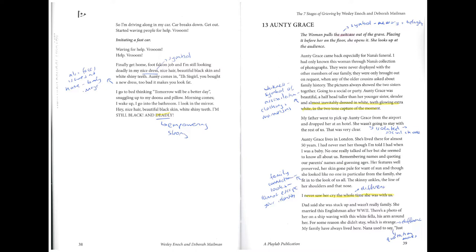Scene 13: Aunty Grace. The woman pulls the suitcase out of the grave, placing it before her on the floor. She opens it and looks up at the audience. Aunty Grace came back especially for Nana's funeral. I'd only known this woman through Nana's collection of photographs — never displayed with the other family members, only brought out on request when older cousins asked about family history. The pictures always showed the two sisters together.